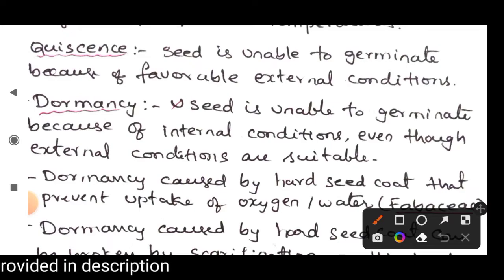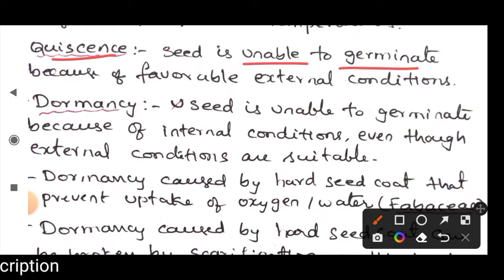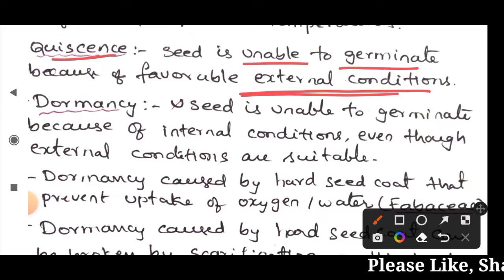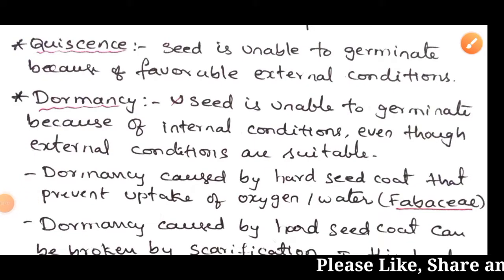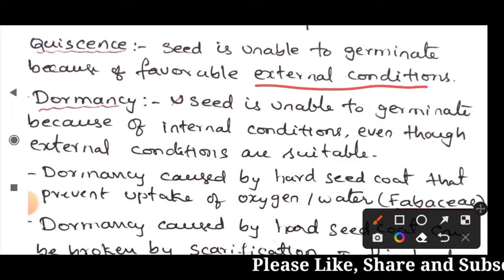The first term is quiescence. Quiescence means the seed is unable to germinate because of unfavorable external conditions. When external conditions become favorable, the seed will germinate.